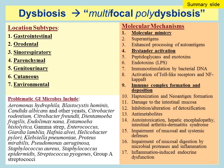Some of the mechanisms involved with these inflammatory conditions associated with microbial infections include: molecular mimicry; superantigen formation and release; enhanced processing of autoantigens; bystander activation; peptidoglycans and exotoxins from gram-positive bacteria; endotoxins from gram-negative bacteria; immunostimulation by bacterial DNA; activation of toll-like receptors and NF-κB; immune complex deposition, which is also very commonly seen in patients with dysbiosis; haptenization and neoantigen formation; and damage to the intestinal mucosa, which exacerbates all of the above and also causes an alteration in detoxification pathways.